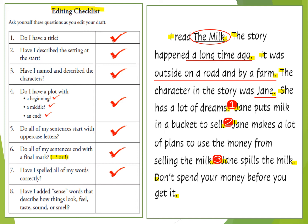Number eight asks: have I added sense words that describe how things look, feel, taste, sound, or smell? Looking back at my writing, I don't think I did a very good job of that. I didn't add a whole lot of details. So no, I did not complete that one. This is where some important editing comes into play — I did include all of the other pieces, which was awesome, but now I have to fix this one.